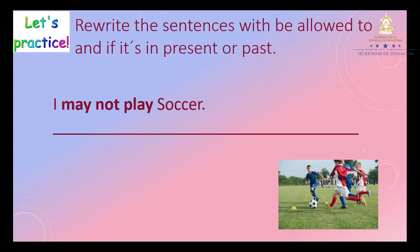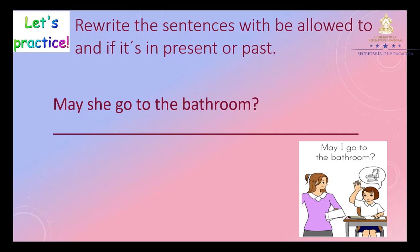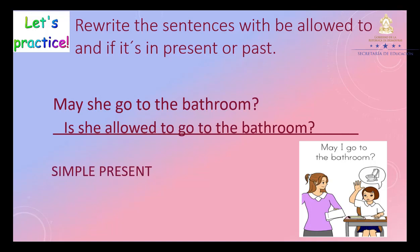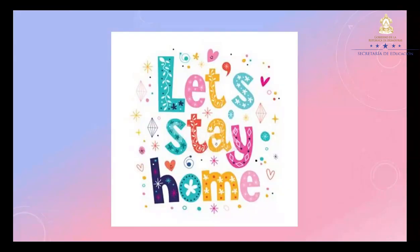Next sentence: 'I may not play soccer.' Answer: 'I am not allowed to play soccer.' We add the verb to be and 'allowed to'. Simple present. Good job. And the last one: 'May she go to the bathroom?' Answer: 'Is she allowed to go to the bathroom?' Simple present. Very good. So guys, this was it. Remember, let's stay home, let's stay safe. See you next time. Bye bye.